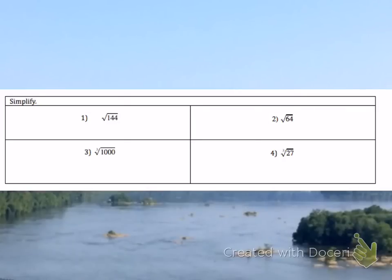Let's practice a couple of square roots and cube roots. The square root of 144 is asking you what number, times itself, gives you 144 — and that's 12, because 12 times 12 is 144. What is the square root of 64? The square root of 64 is asking what number as a factor twice gives you 64, and that number is 8, because 8 times itself is 64.